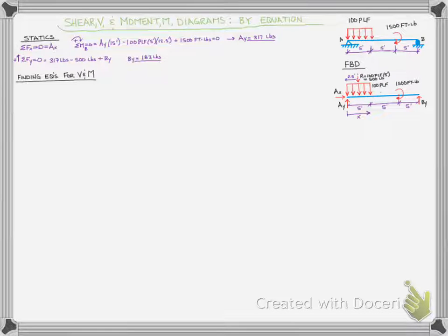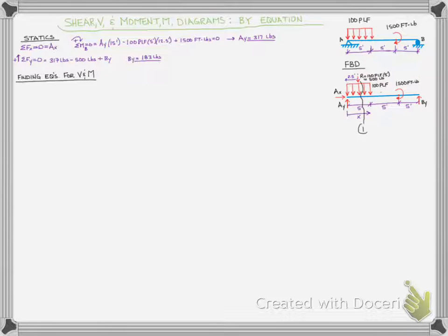Looking at where we have discontinuities: we start with AY, then a constant load of 100 pounds per lineal foot that stops at five feet — that's our first discontinuity. Between five and ten feet we have zero load, then the application of the moment at ten feet, and then zero load until BY at fifteen feet. So we make cuts between the three discontinuities in our load — before and after each one.